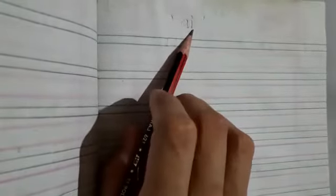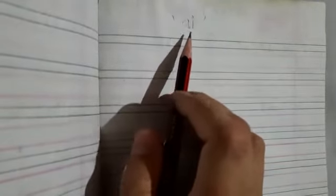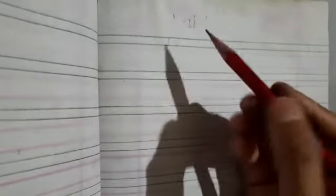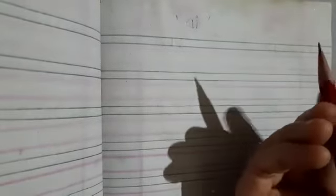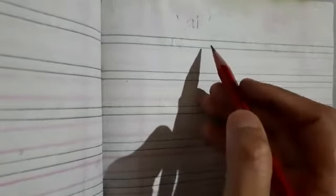Hello students, today we will learn about AI sound words. As I told you, when two vowels come together they say one sound. Here, A-I — we are going to learn about AI sound words. When two vowels together say one sound, the sound is the name of the first letter.